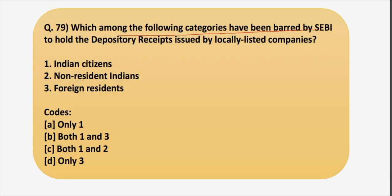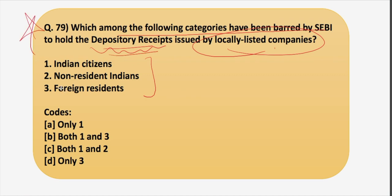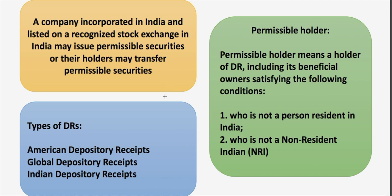The next question asks which categories have been barred by SEBI to hold depository receipts issued by locally listed Indian companies. As part of the stimulus package, Finance Minister Nirmala Sitharaman announced that the Depository Receipt Scheme 2014 would be operationalized soon by SEBI. SEBI released a detailed framework: a company incorporated in India and listed on a recognized stock exchange may issue permissible securities. Permissible securities means equity or debt in dematerialized form.